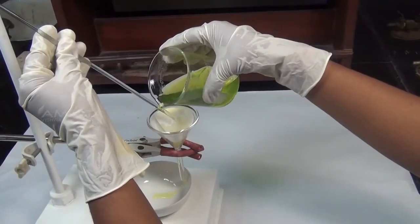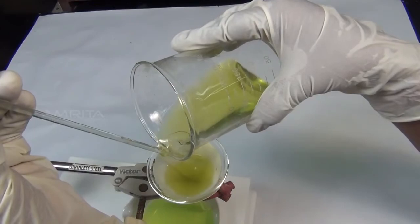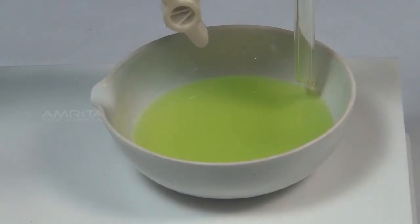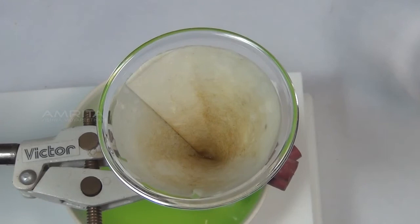Then filter the solution into a china dish using a funnel and filter paper. The stem of the funnel should touch the wall of the china dish to avoid the solution splashing out. After filtration, the insoluble impurities are left behind on the filter paper.